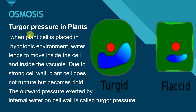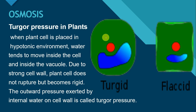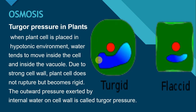Let's see turgor pressure in plants. When plant cell is placed in hypotonic environment, water tends to move inside the cell and inside the vacuole. Due to strong cell wall, plant cell does not rupture, but becomes rigid. The outward pressure exerted by internal water on cell wall is called turgor pressure. Vacuole ke paani ko absorb karni ki wajah se, vacuole mein swelling ho jati hai and the cell becomes rigid. Toh internal water ka pressure, joh external side pe cell wall ke lagta hai, usko turgor pressure bolte hai, and we will say the cell is turgid.